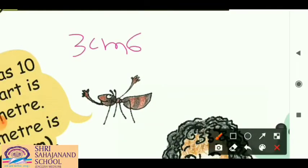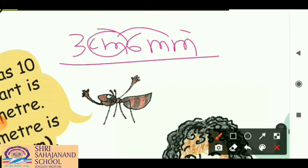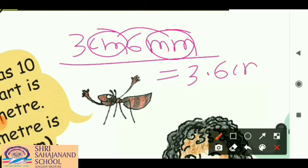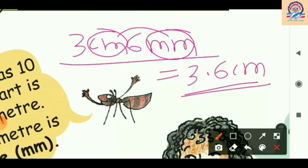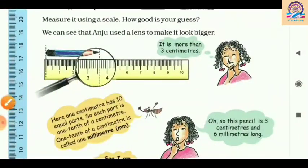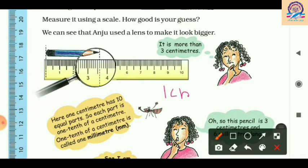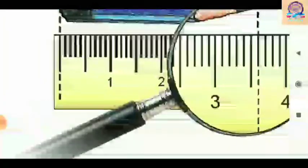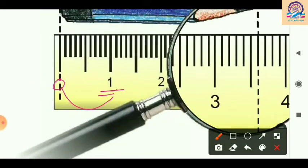The length of the pencil is 3 centimeters and 6 millimeters, which can be written as 3.6 centimeters. Now you need to know the relationship between centimeter and millimeter. As you all know, one centimeter makes 10 millimeters. You can see on the scale that between 0 and 1 there are 10 small dots.